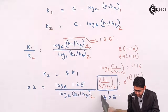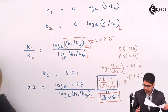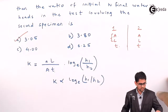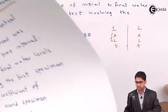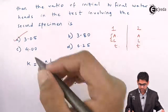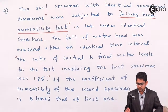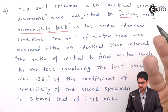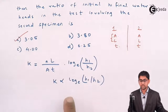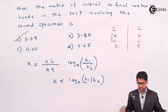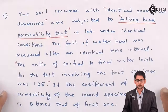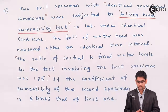The result is h1/h2 for the second specimen equals 3.05. Checking the options, the first option of 3.05 is correct. This finishes problem 4 in the permeability of soil chapter. The key requirements are knowing the falling head permeability test formula, identifying what remains constant, and understanding that k is logarithmically related to the head drop.